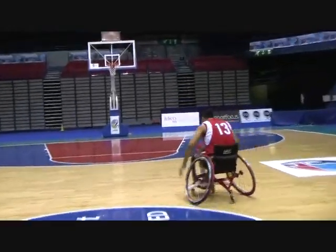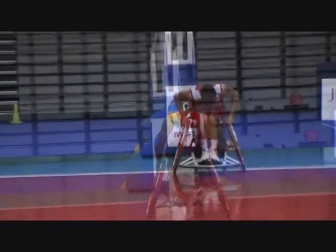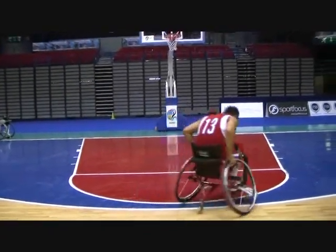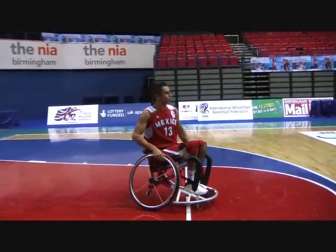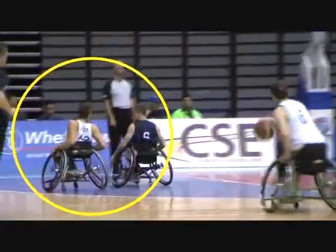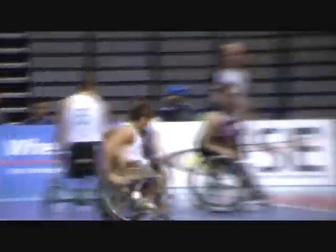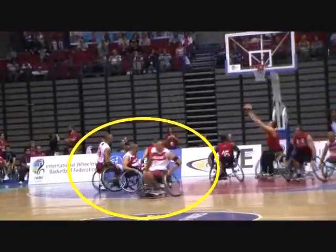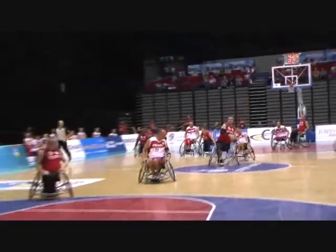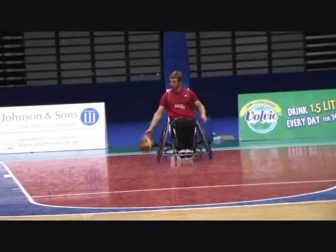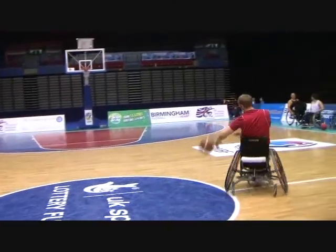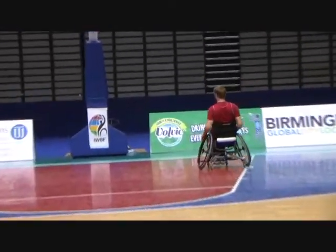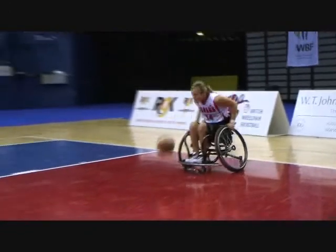When stopping quickly or turning hard, the Class 1 player shows difficulty maintaining his trunk upright and will attempt to counterbalance by leaning head and shoulders hard back into the backrest. One hand is often required for support to avoid losing balance. Class 1 players usually dribble at the side of the chair and near the trunk, taking effort to maintain balance while dribbling and pushing simultaneously. Some players may dribble in front of the footrest, resting their upper body on elevated knees for stability.